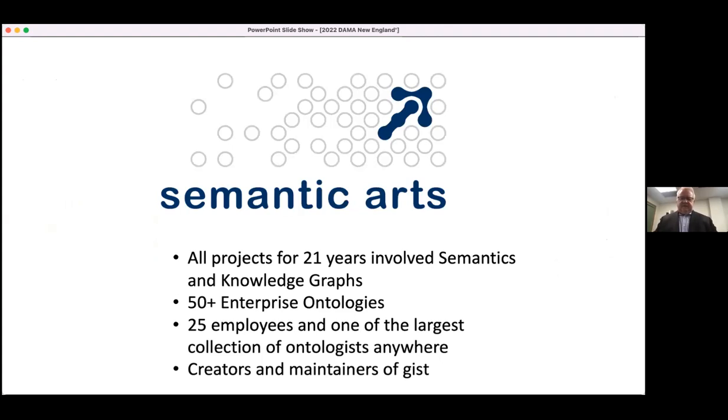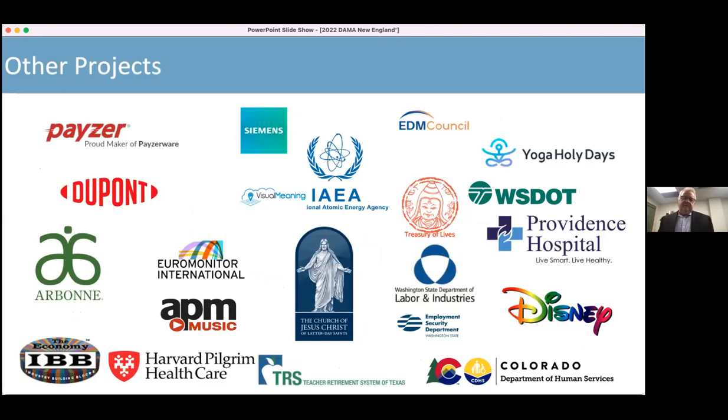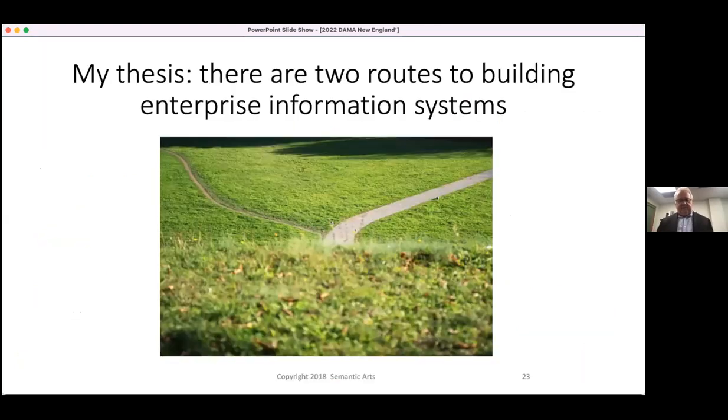So the company, everything we've done for 21 years has been about semantics and knowledge graphs. We've built at least 50 enterprise ontologies. There's 27 of us now, but we're probably one of the largest collections of these kind of people. We create and maintain and make freely available an upper ontology that's called GIST. It's on our website. You'll see it at the end of the presentation. And just to give you an idea who's on this journey at some level or not, these are people who have worked with us. They're doing some of this and here's some other smaller companies or larger companies who we've worked with.